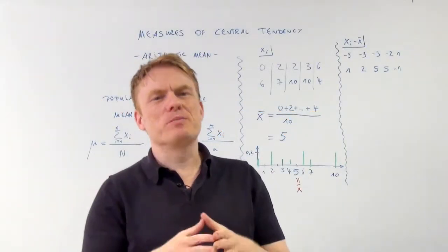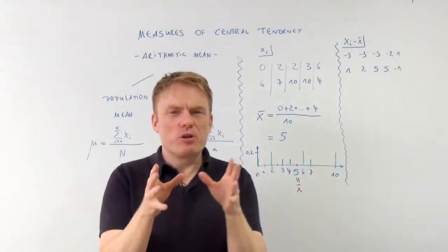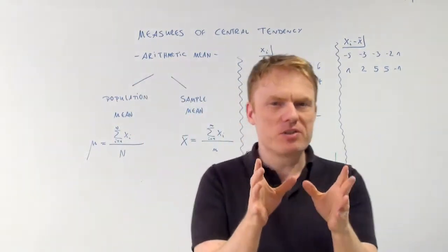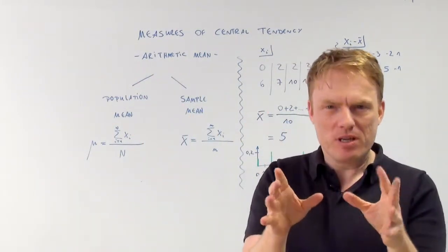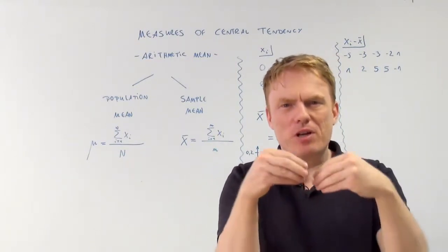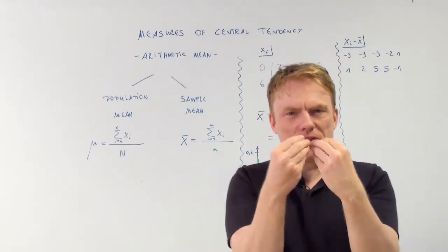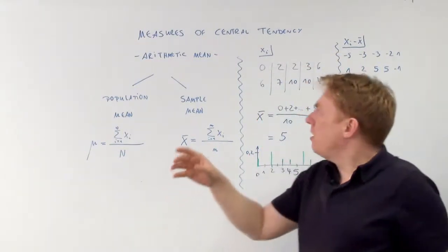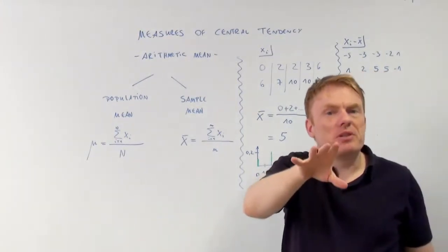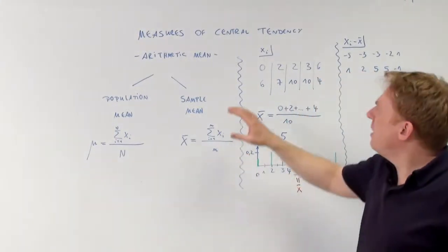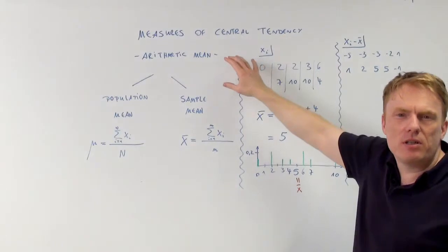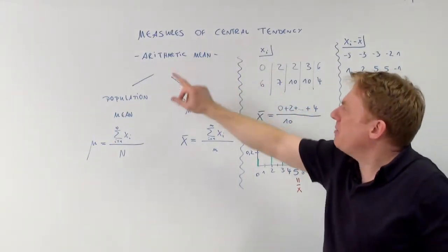Welcome to our next video. We're talking about statistics — specifically measures of central tendency. If you have a distribution, you need to talk about the central tendency. You have to talk about dispersion also, but let's first take a look at central tendency, talking about arithmetic mean.